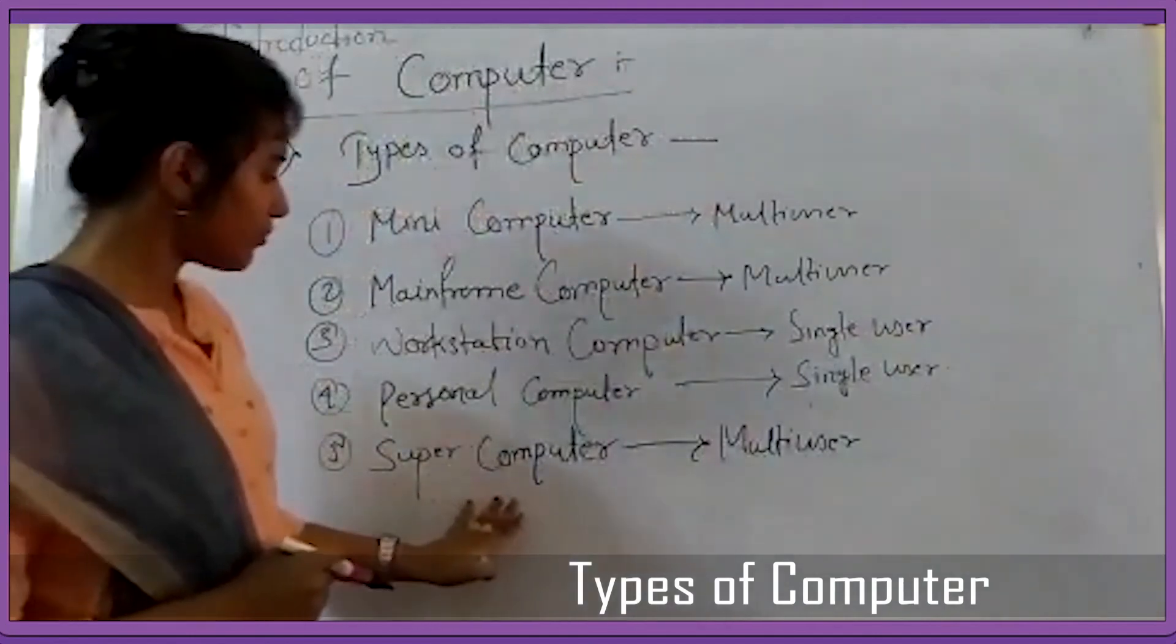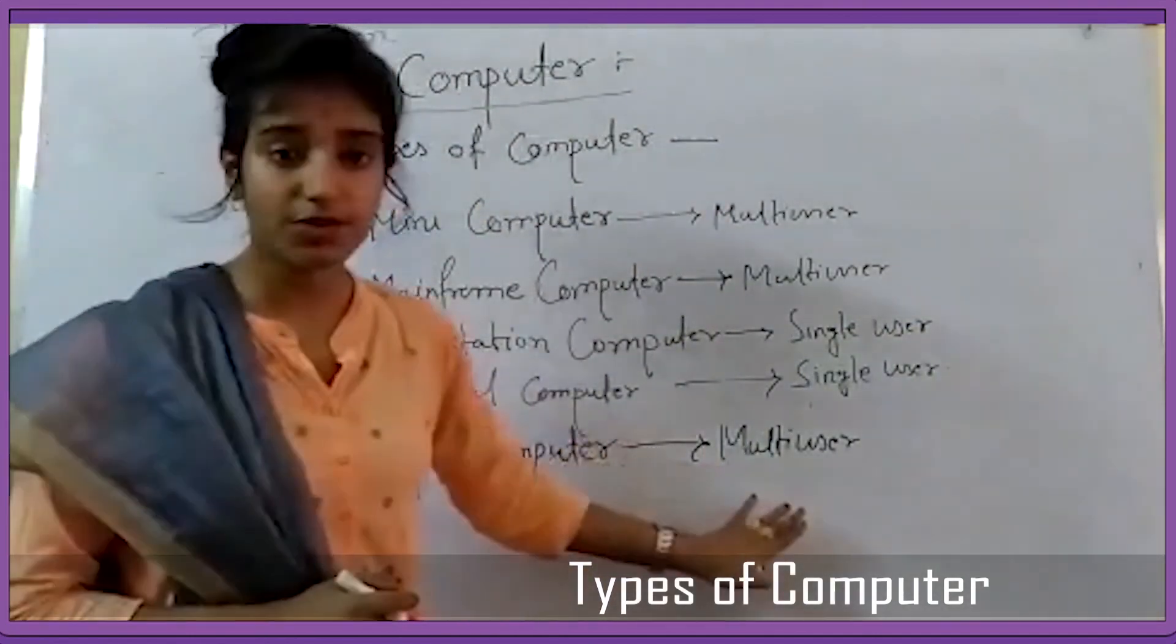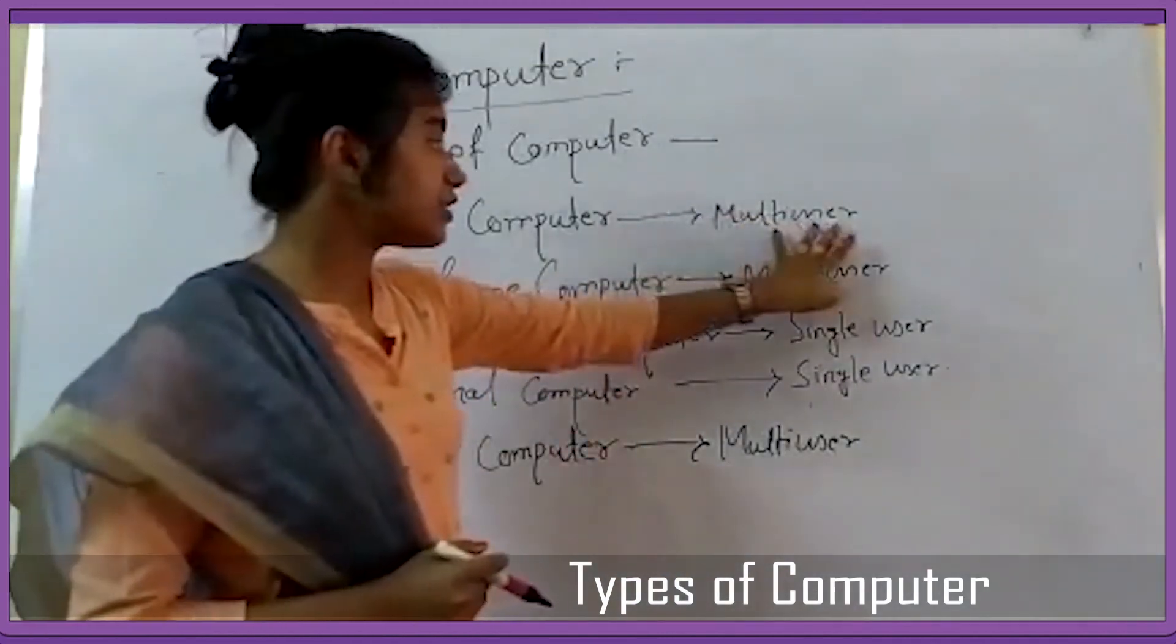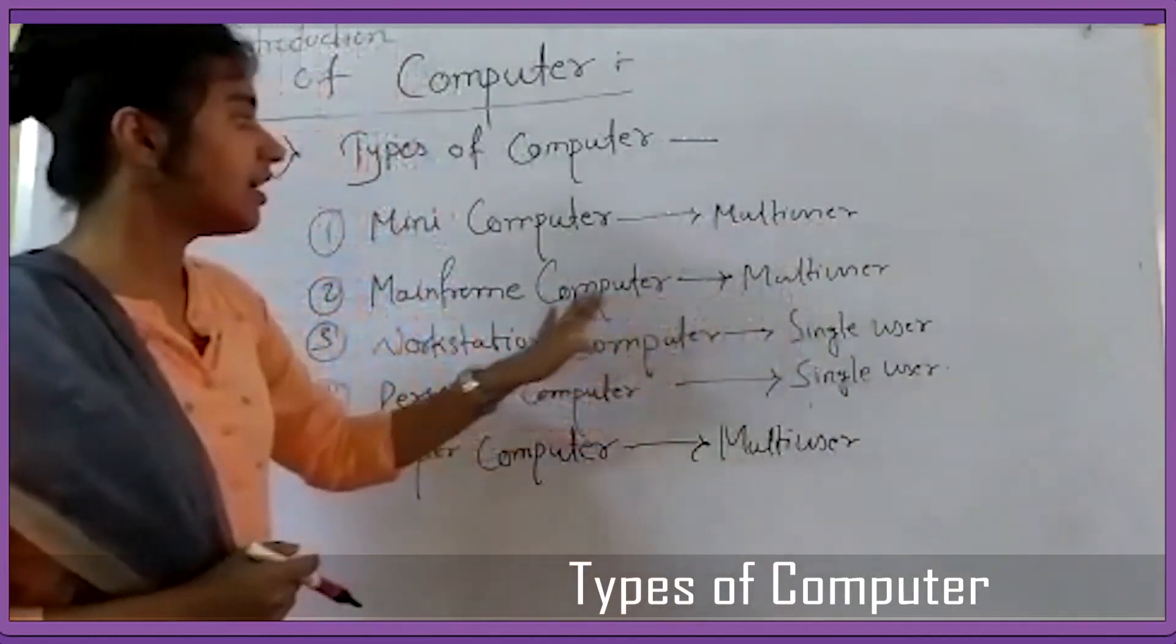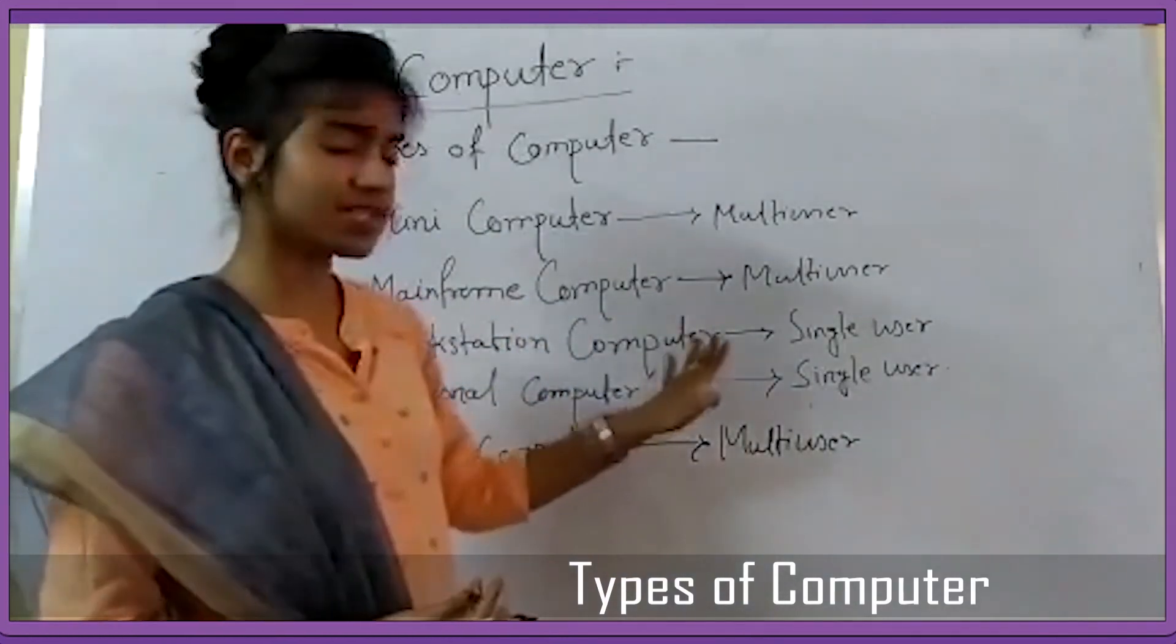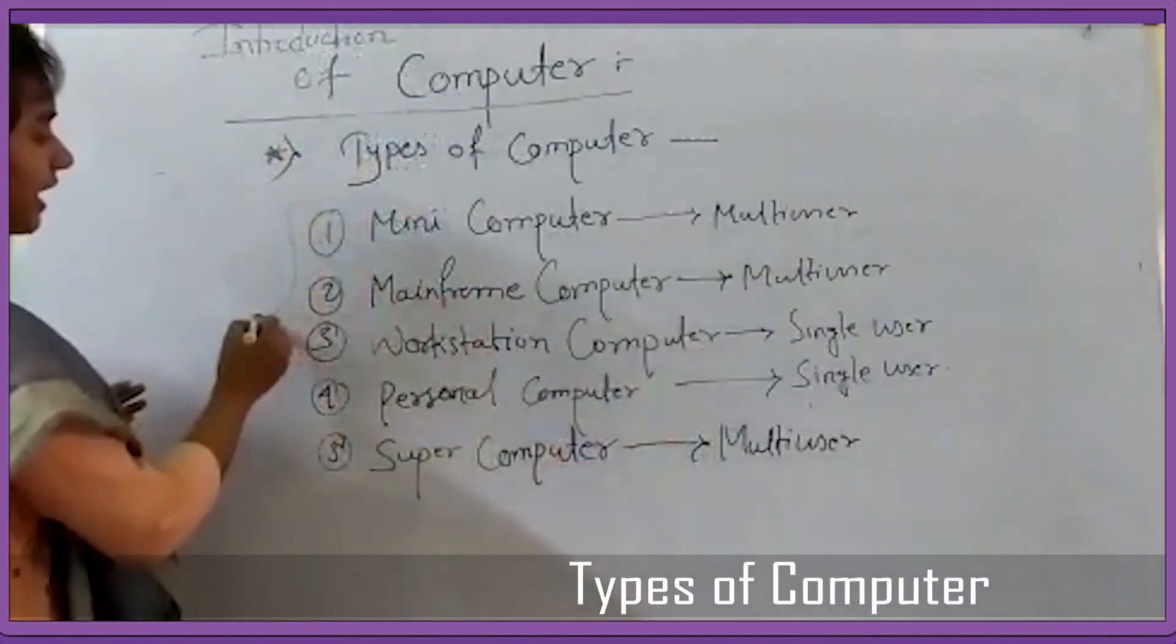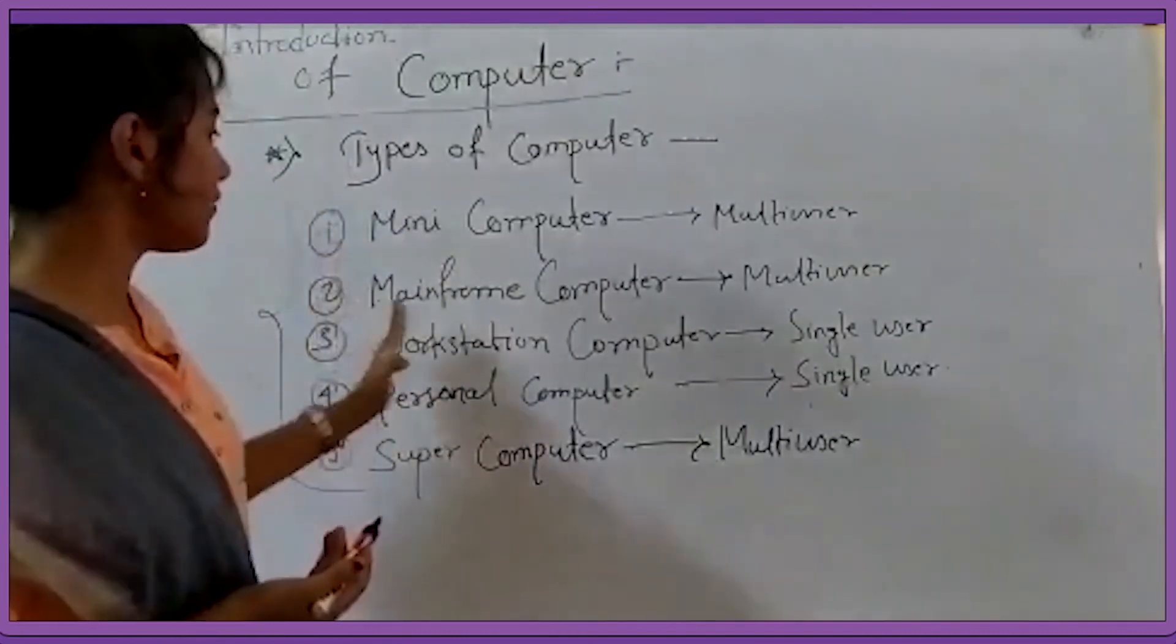When computers were invented, there was super computer, multi-user computer, then mini computer, mainframe computer - these were multi-user. Then came single-user computers. These are basically the main five types, though there are also many other types.